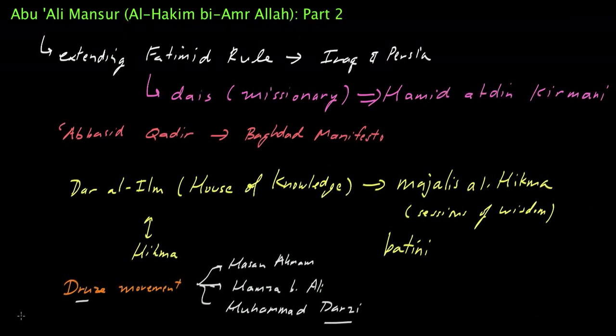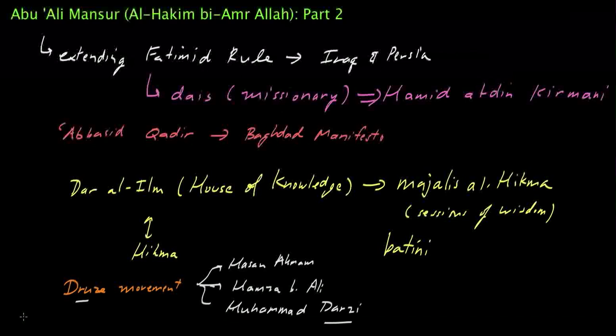So, even though there are some people out there who thought that al-Hakim was, you know, behind the Druze Movement, there's a lot of evidence to suggest the contrary. There is actually, in fact, no historical evidence to suggest that he really supported the Druze Movement, and all the people who said he did were actually people who were inherently biased against al-Hakim.